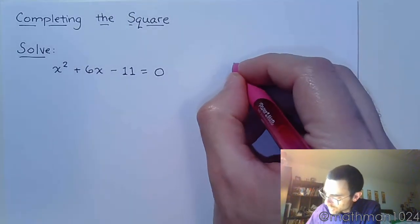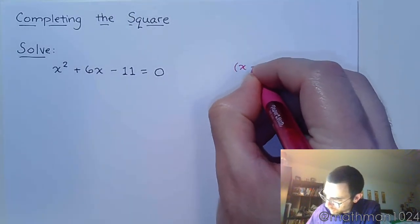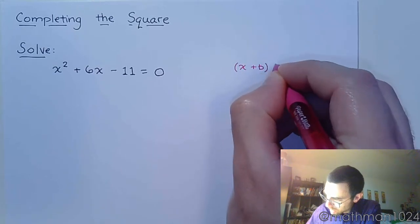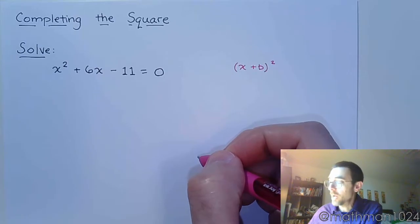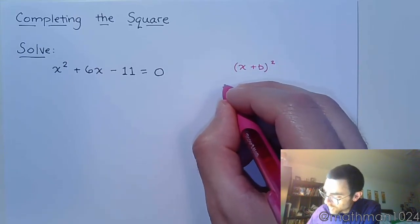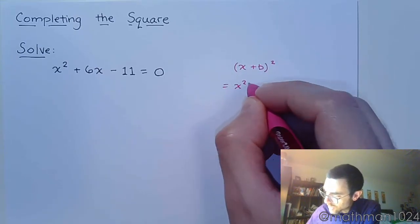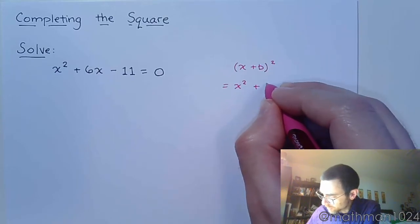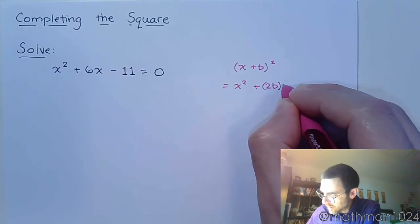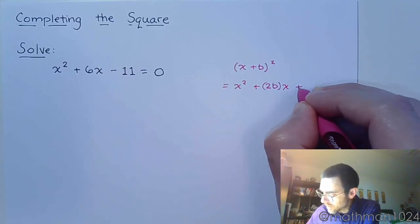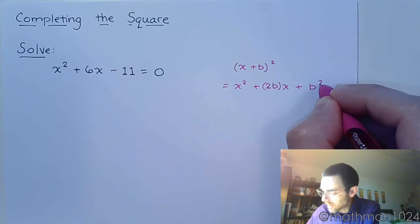And it's all based on a particular formula that you may or may not remember. So a long time ago you would have talked about special formulas when you're squaring a binomial like this. And when you square this you get x² + 2bx + b².